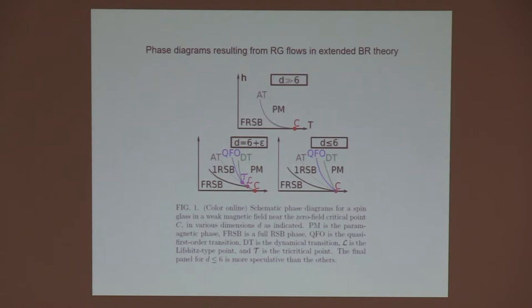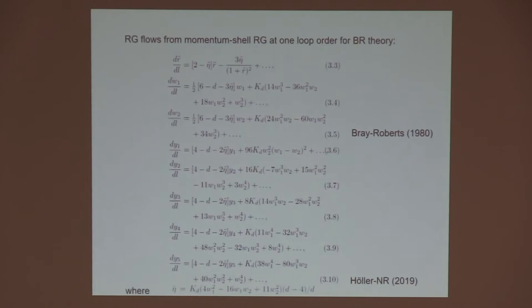All right. So this is the renormalization group equations that we derived. The first three of these equations are exactly what's in Bray-Roberts in 1980, and then we have the five equations for renormalization of the yi coefficients. Actually, we've calculated only the most important terms. The dots in these equations represent other one-loop terms which are not important in the analysis because they're ultimately smaller. I should mention that this is joint work with my student Judith Huller, and the paper is on the archive today. Eta tilde is the anomalous dimension which appears in these things here. That also comes from Bray-Roberts.